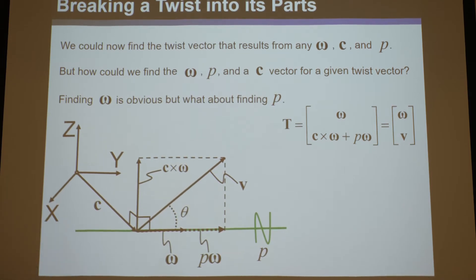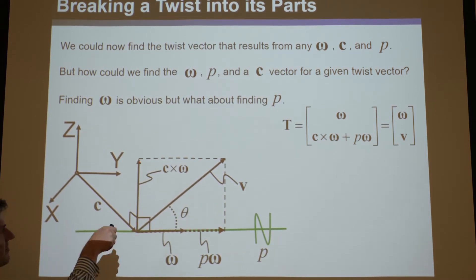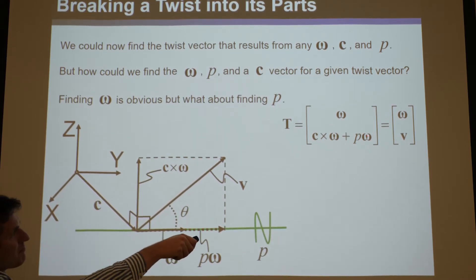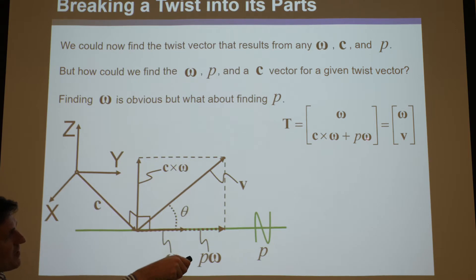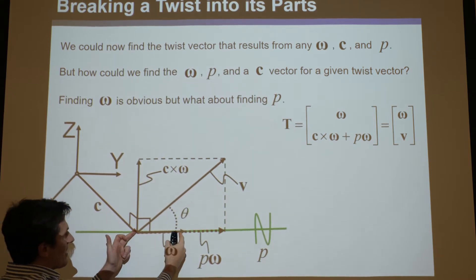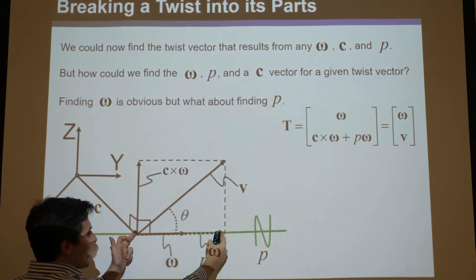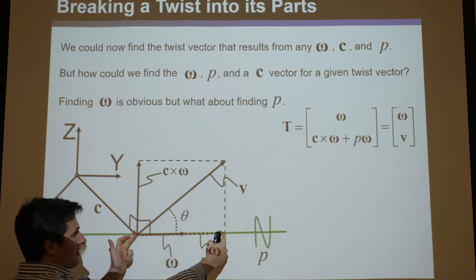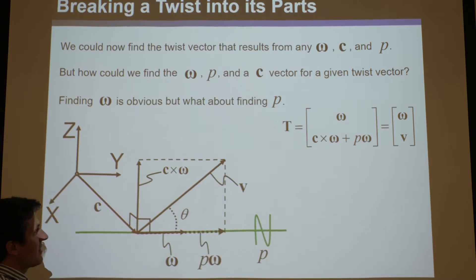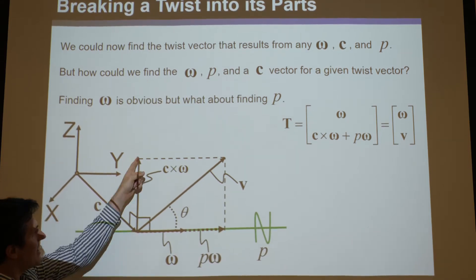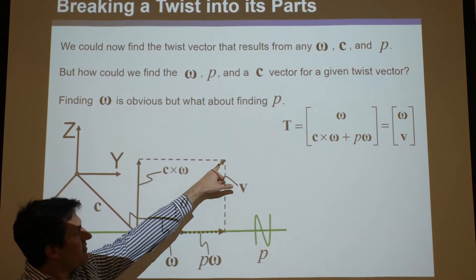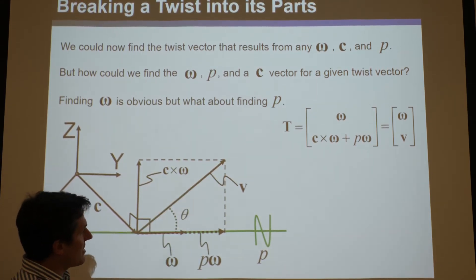So that's one vector, that's the first part. And then plus p*omega — p*omega is omega times p, so it points in the same direction but it's a different length. So if you add this plus this, you get v.